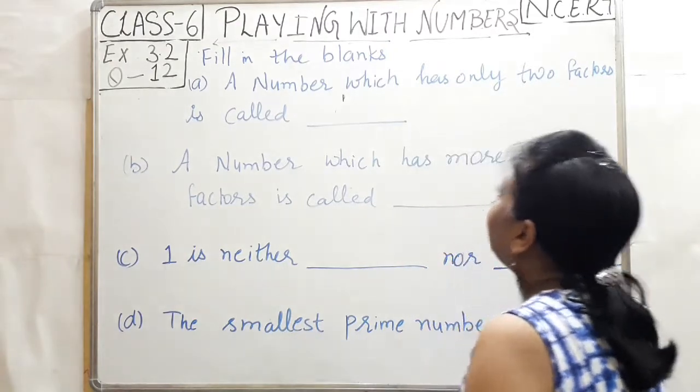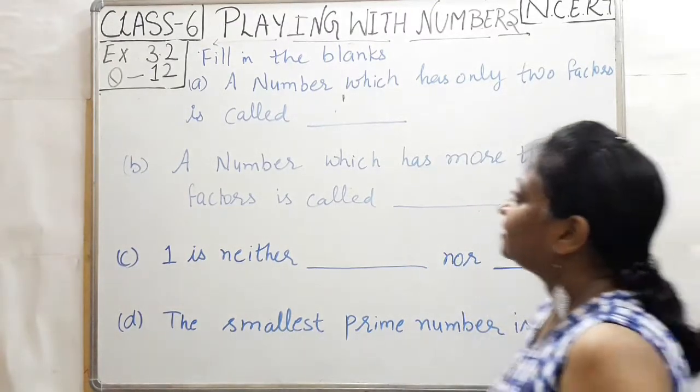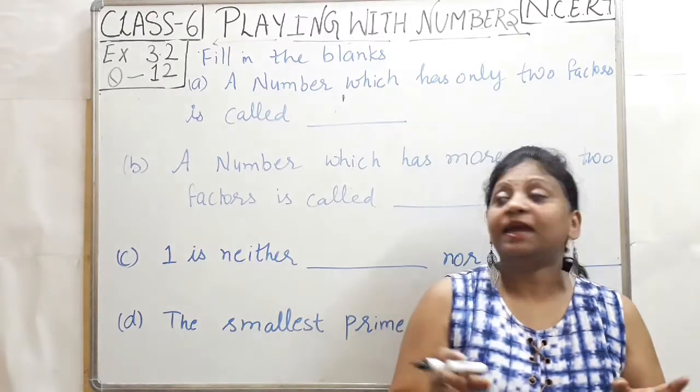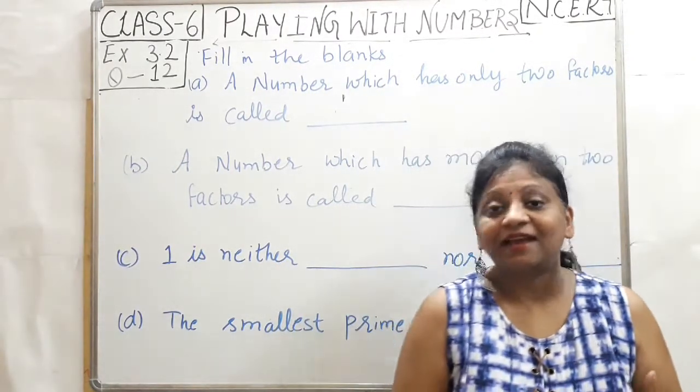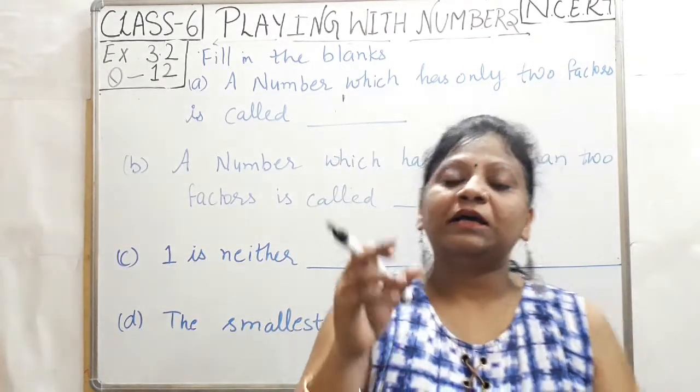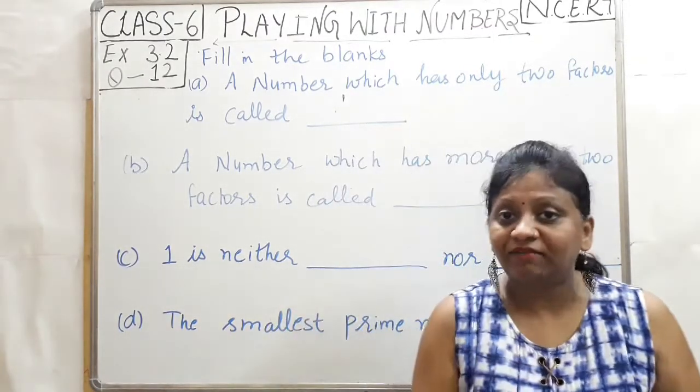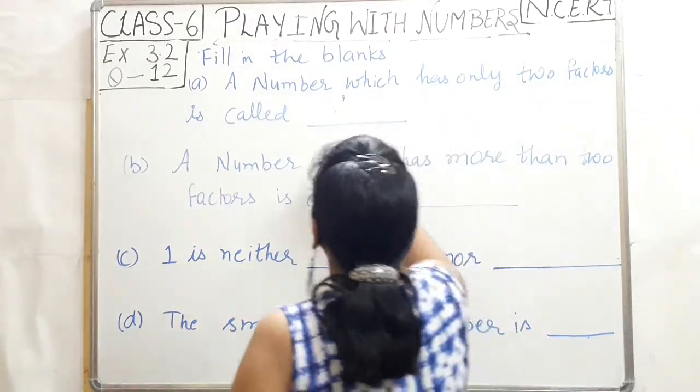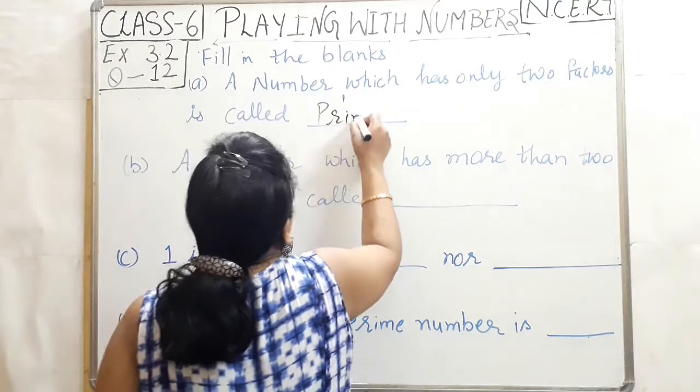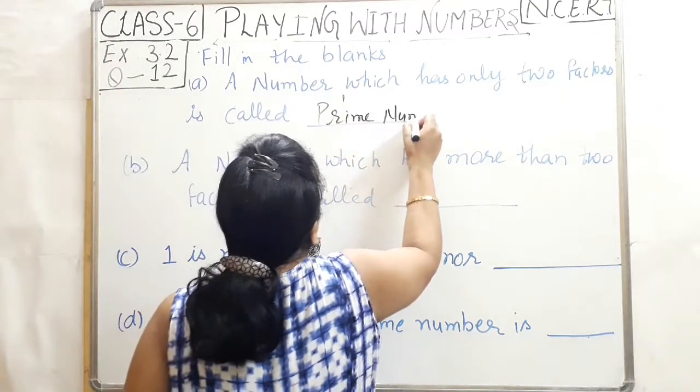First, a number which has only two factors is called. A number which has only two factors, what are they? They are prime numbers. Why? Because prime numbers have only two factors - one and the number itself. So these are called prime numbers.